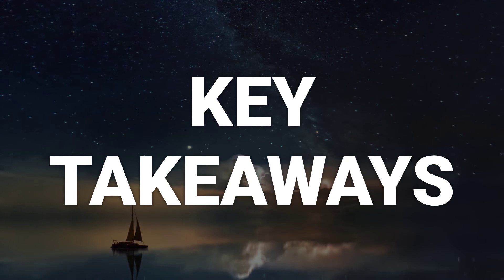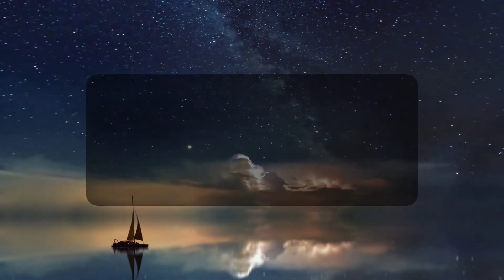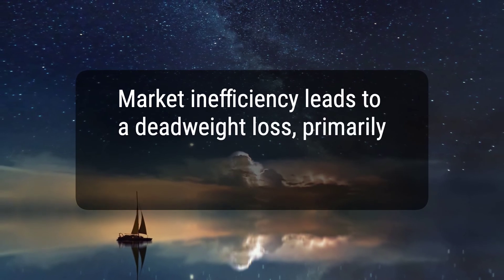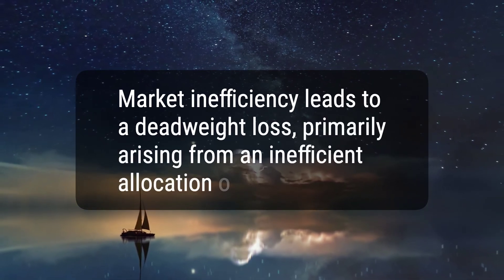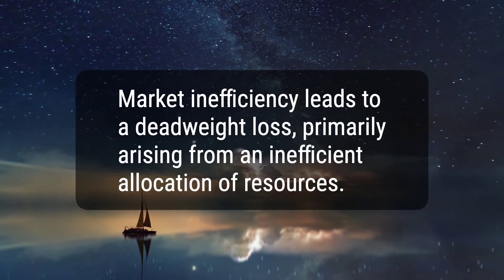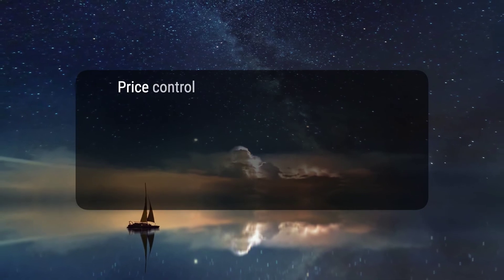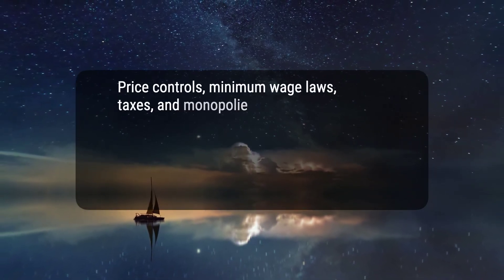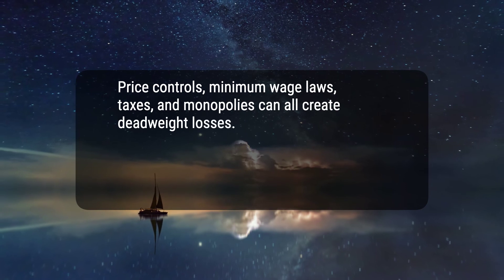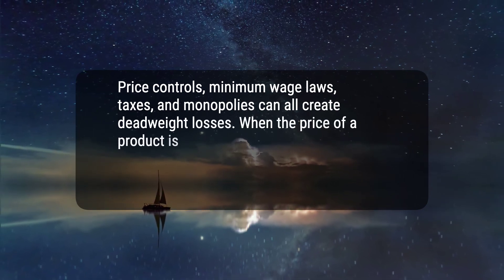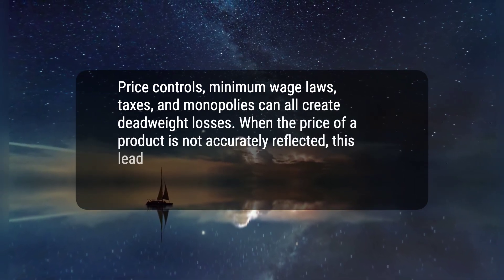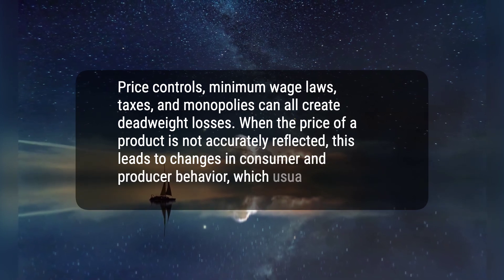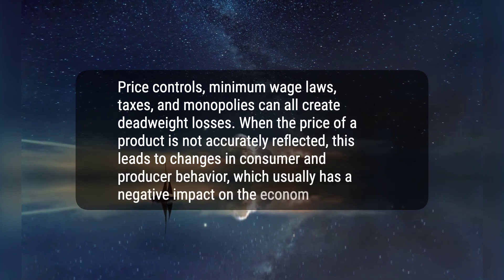Here are two key takeaways. First, market inefficiency leads to a deadweight loss, primarily arising from an inefficient allocation of resources. Second, price controls, minimum wage laws, taxes, and monopolies can all create deadweight losses. When the price of a product is not accurately reflected, this leads to changes in consumer and producer behavior, which usually has a negative impact on the economy.